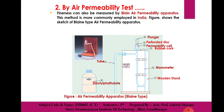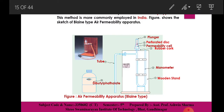To perform the test, we supply air and maintain the viscosity using two tubes in the plunger. We use the manometer, the wooden stand, and oil. We adjust the viscosity, the plunger, and manage the mold and the permissibility cell. A perforated disc is also used before the plunger.